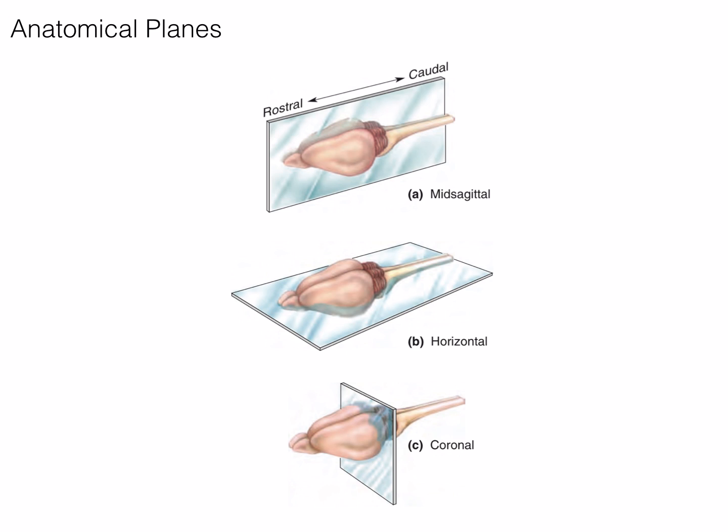Lastly, a coronal plane bisects the brain from dorsal to ventral, and left to right.